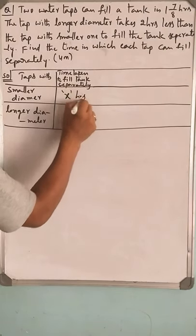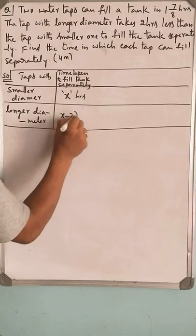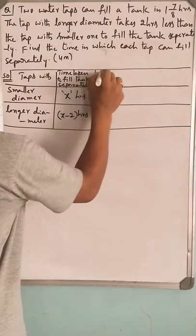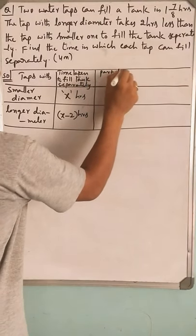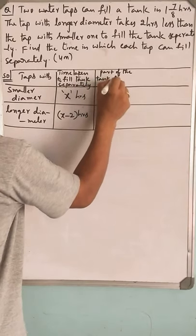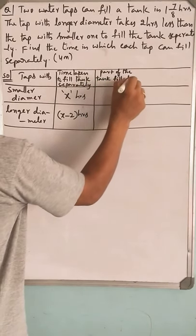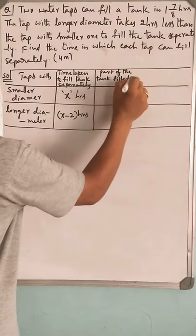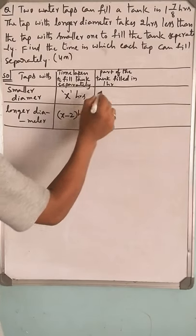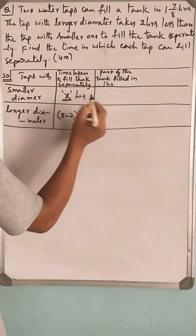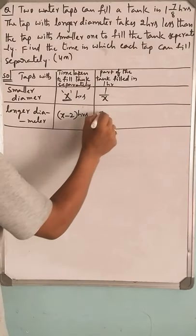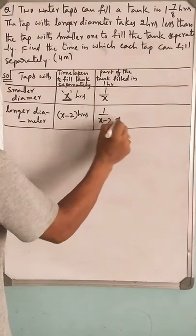Time taken separately: let's take x hours and x minus 2 hours. Part of the tank filled in one hour (efficiency): if it takes x hours, in one hour it can do 1/x part, and the other will do 1/(x-2).